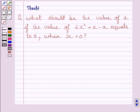Hi and welcome to the session. Let us discuss the following question. What should be the value of A if the value of 2x² + x - A equals 5 when x = 0?